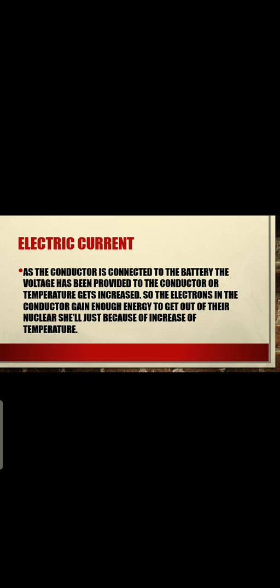Just because of the increase in temperature, the electrons get enough energy to get out of the shell of the nucleus. As the voltage is provided to the metal plate, the electrons gain enough energy to get out of the shell of the nucleus and the electrons start moving. Similarly, if the temperature of the metal plate is increased, the electrons gain enough energy to move and get out of their shell.